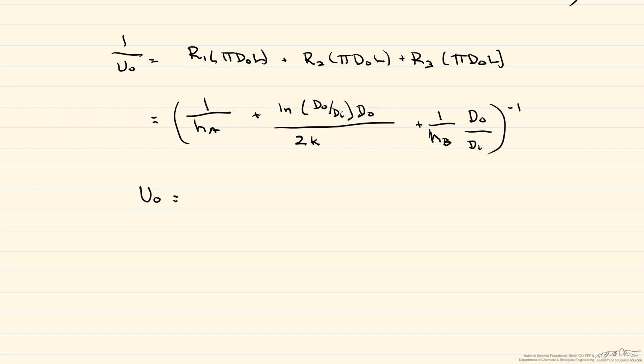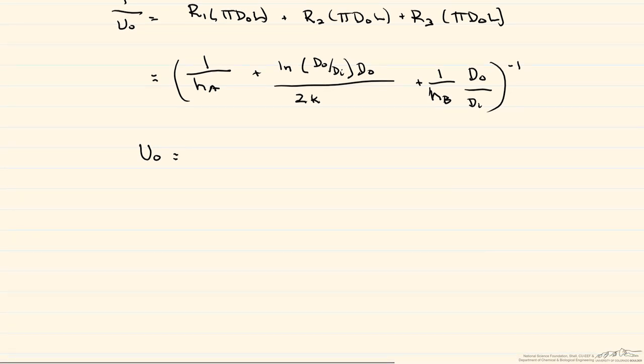One of the things that can make this an easier problem is you can assume that the wall between the two fluids is thin, therefore that conductive resistance is negligible. So now we can actually find U, so this is just U outside, because the areas are all the same. So our U is going to be equal to 1 over HA plus 1 over HB to the minus 1.